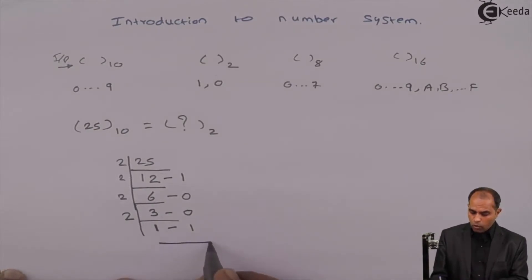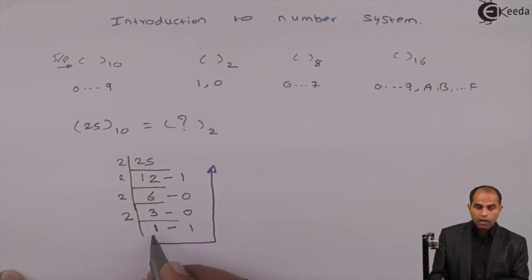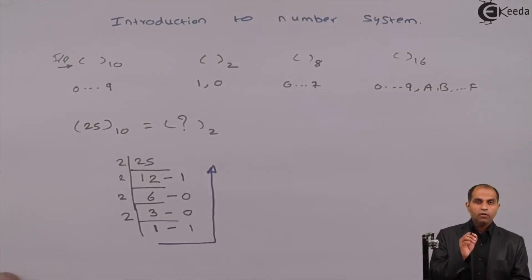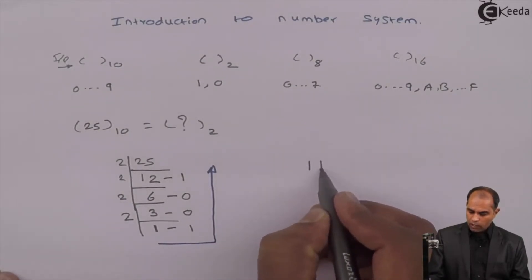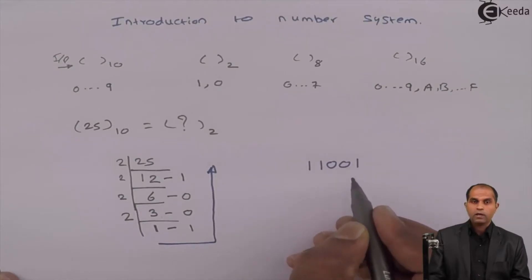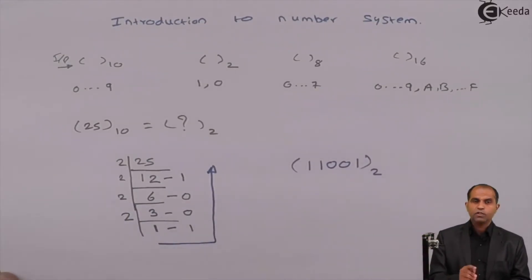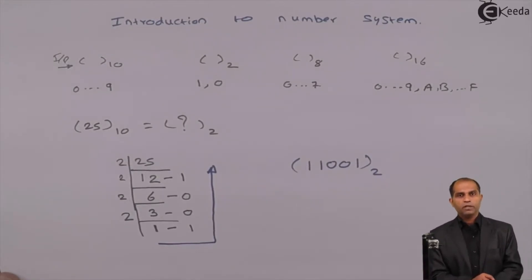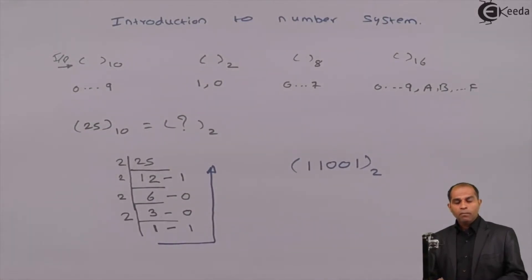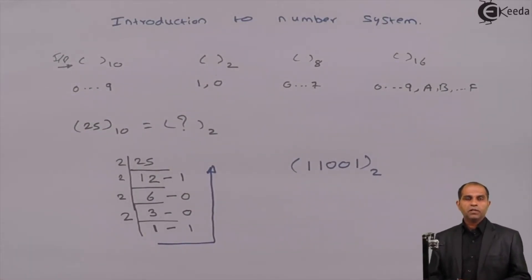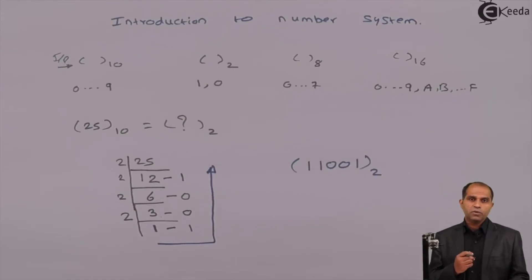Now collect all these numbers in reverse order — from the last quotient to the first remainder. The result is 1 1 0 0 1, which is the binary of 25. So I have converted the decimal number 25 into binary. But in programming languages, numbers are not represented just with the raw binary values — they are represented with additional zeros in a byte format or a 2-byte format.